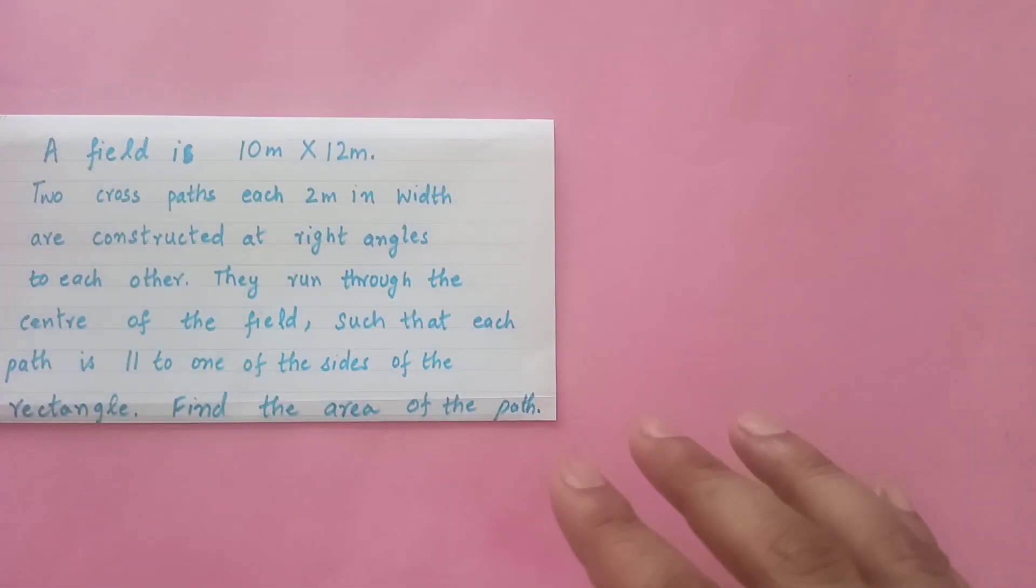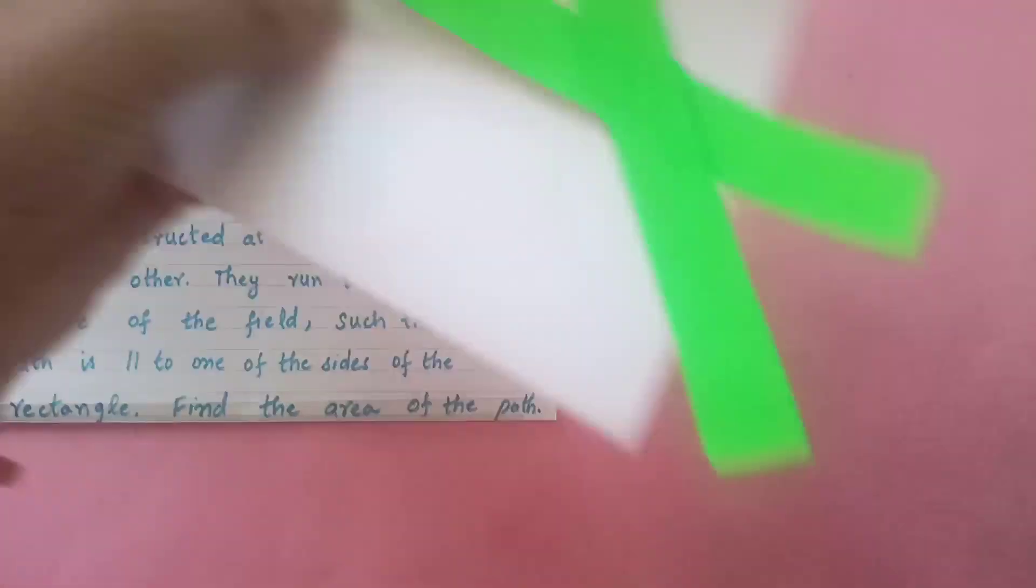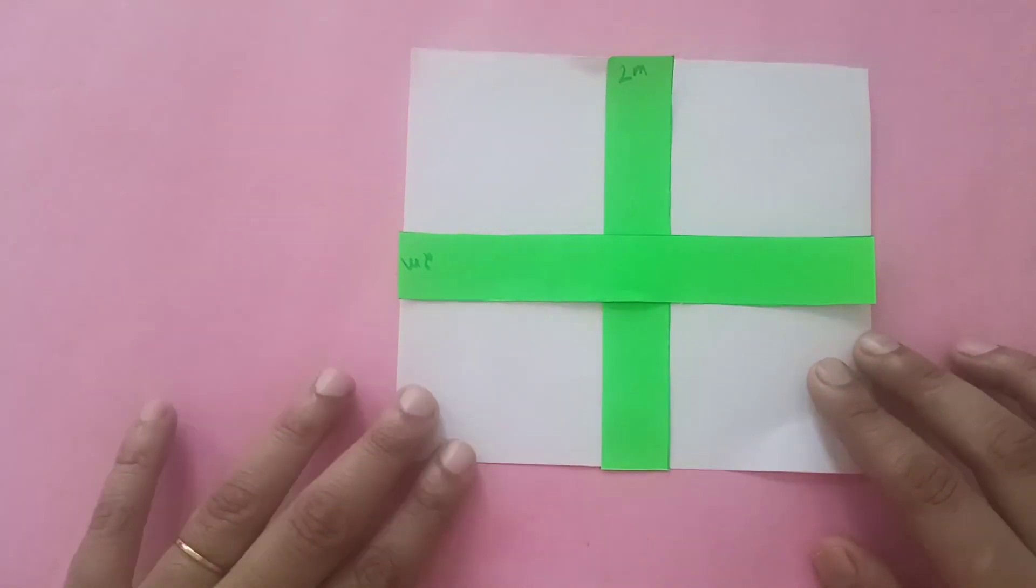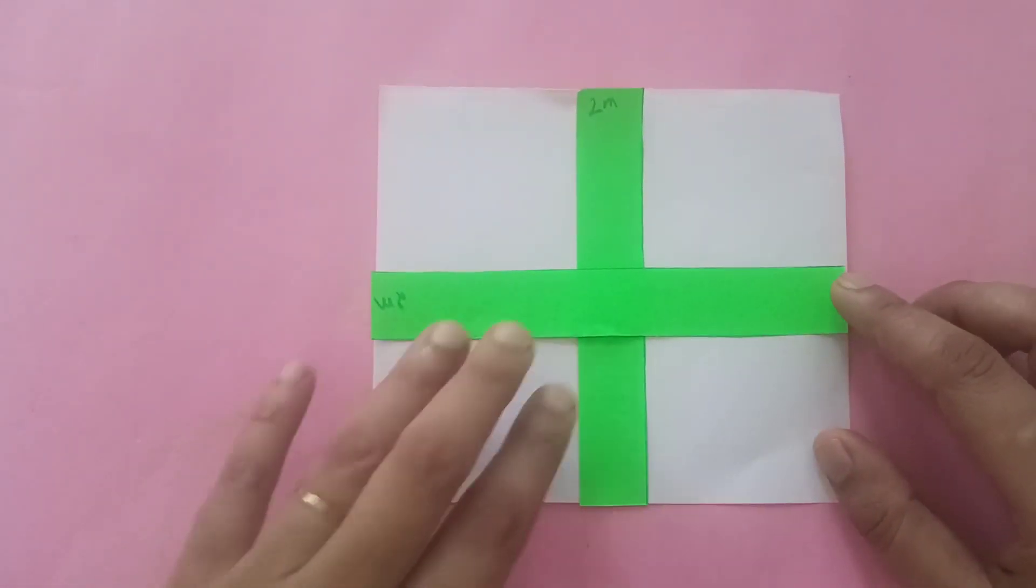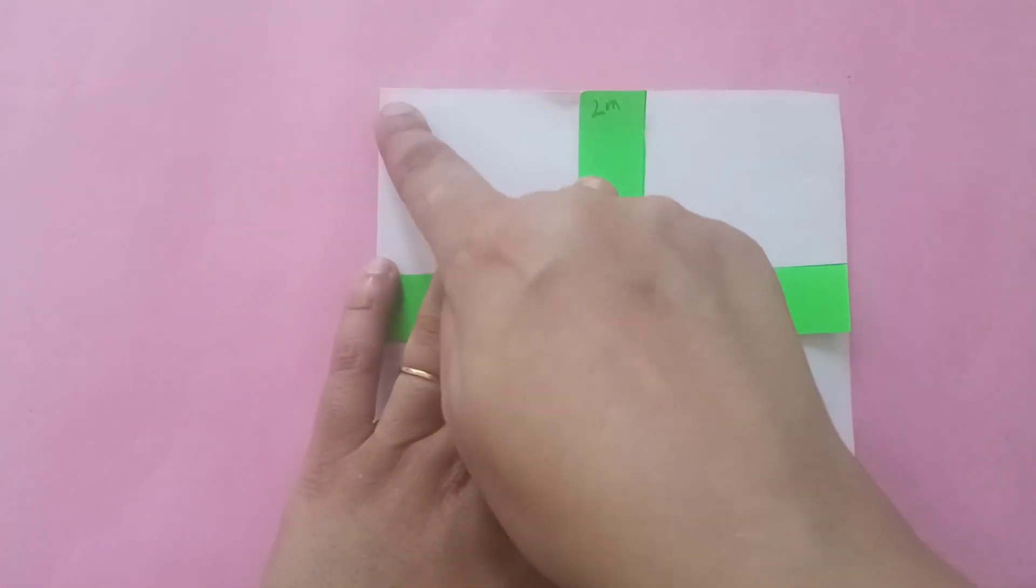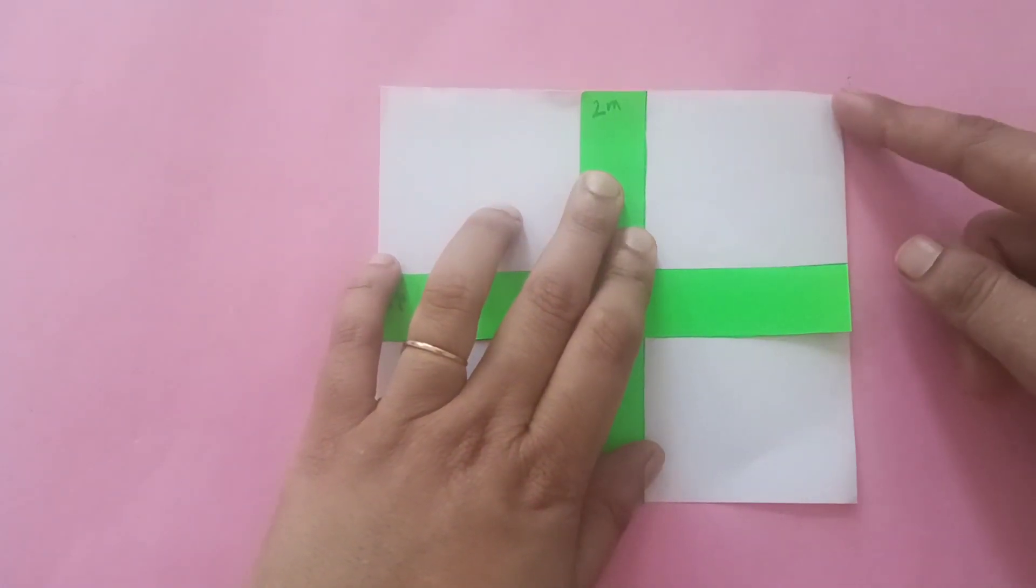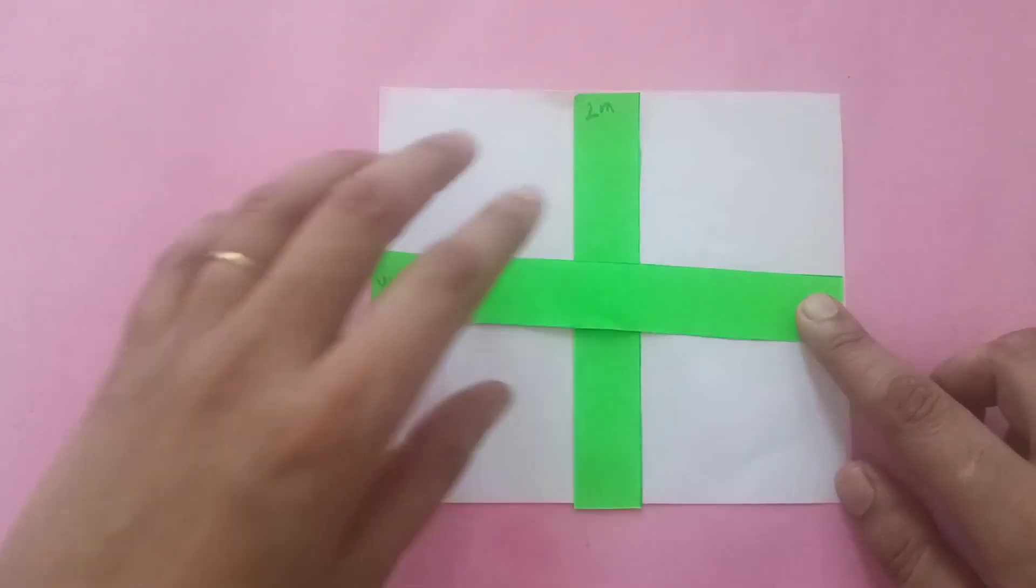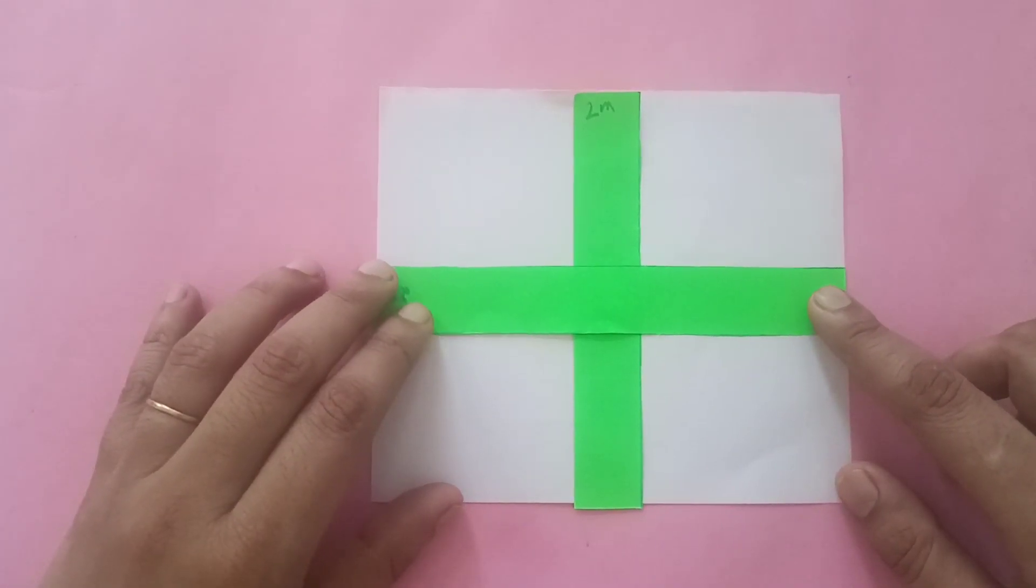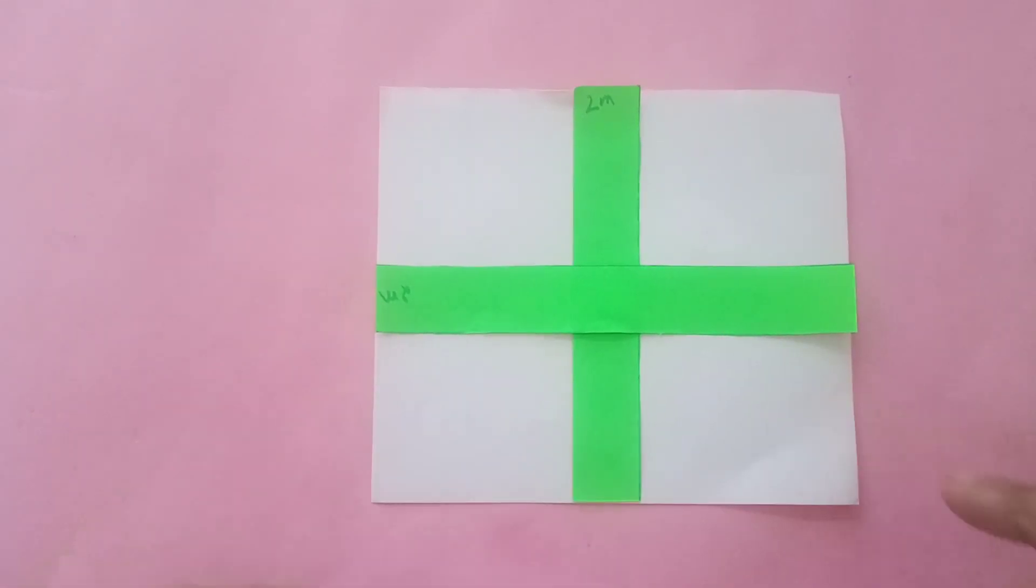So now it looks something like this. This is the field - the field is 10 by 12. And these are the paths, and they are perpendicular to each other, they are at right angles.